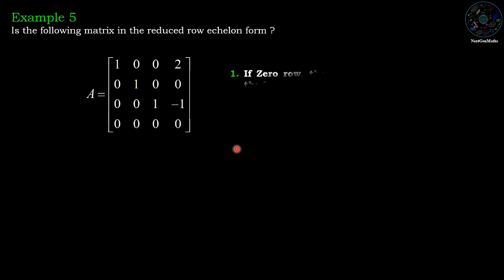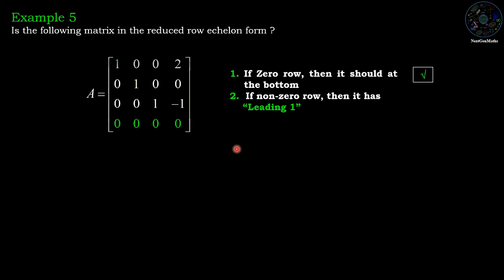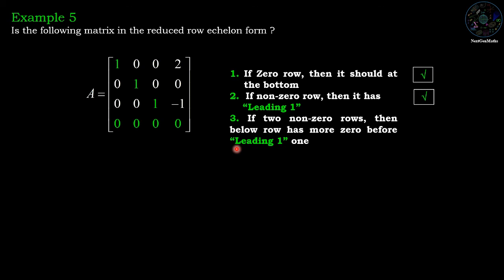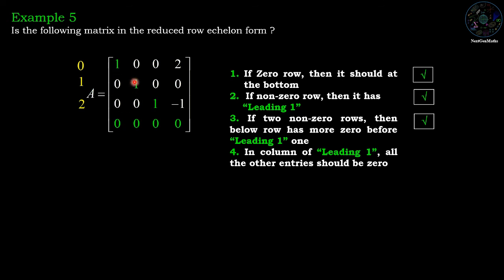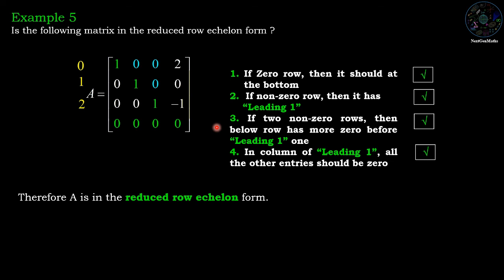Example five: first condition — zero row at the bottom, correct. Second condition — leading one, correct. Third condition: the first row has zero zeros, the second row has one zero, and the third row has two zeros before the leading one — condition three is satisfied. Fourth condition: in the columns of the leading ones, all other entries must be zero. In all three columns, all entries except the leading one are zero — condition four is also satisfied. Hence this matrix is in reduced row echelon form.